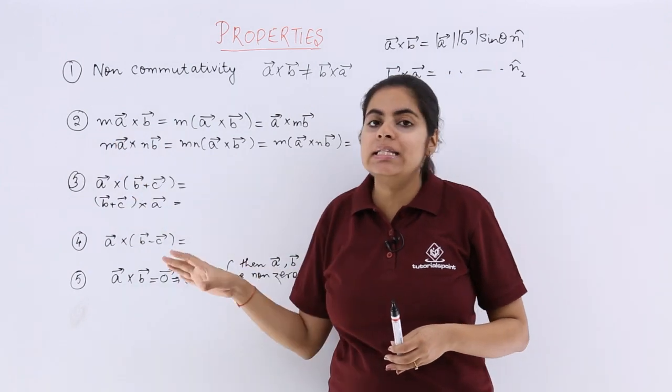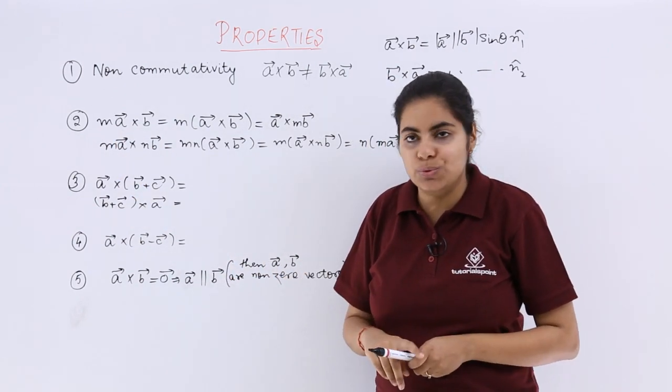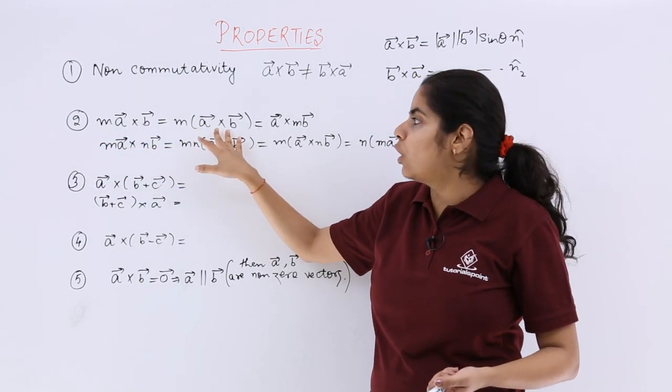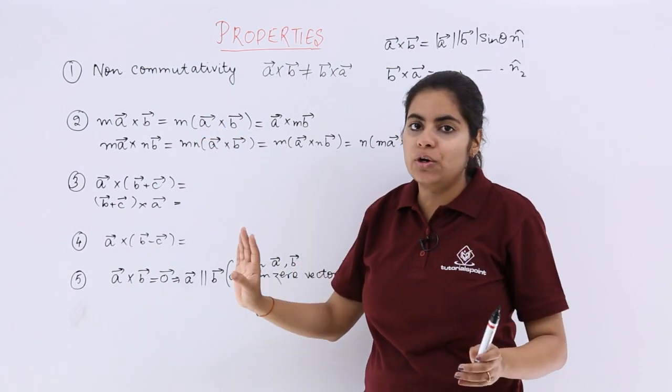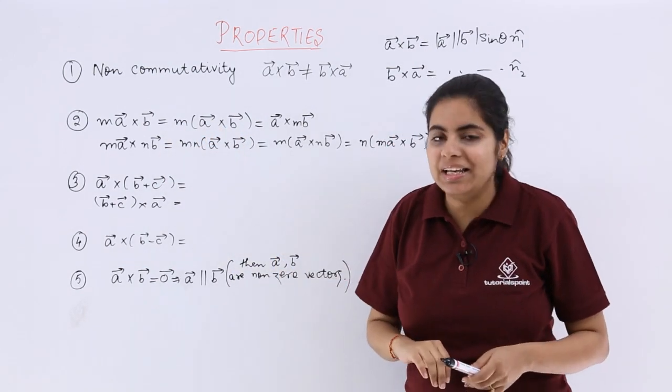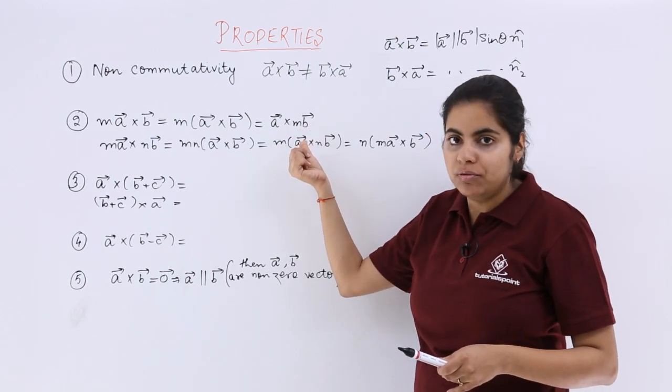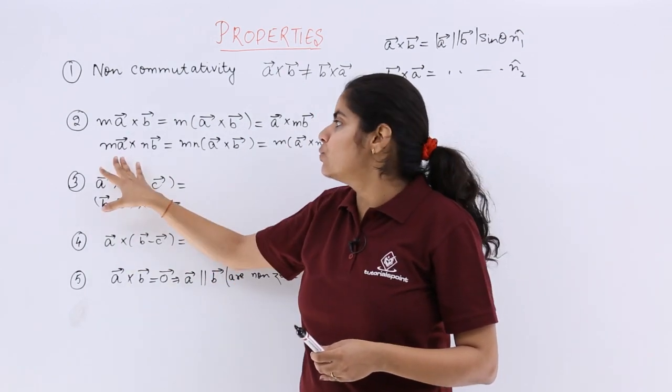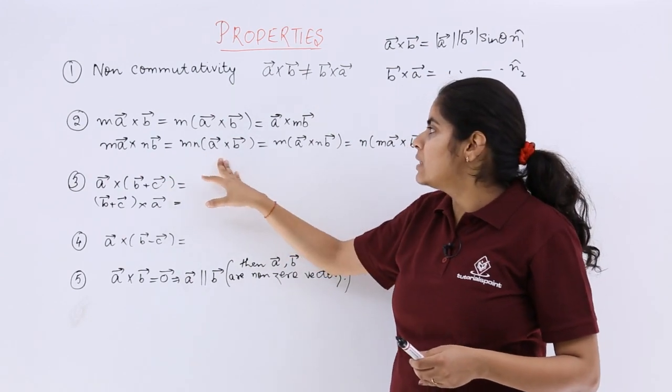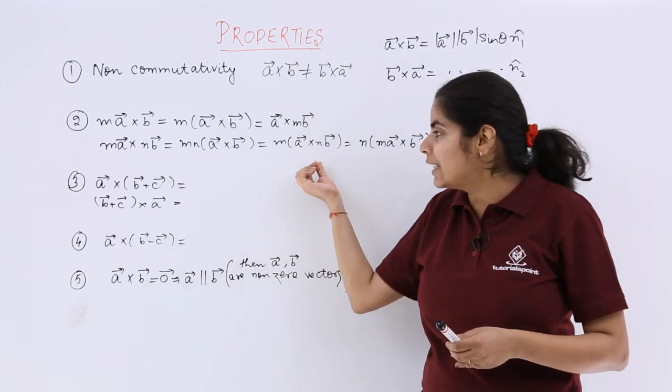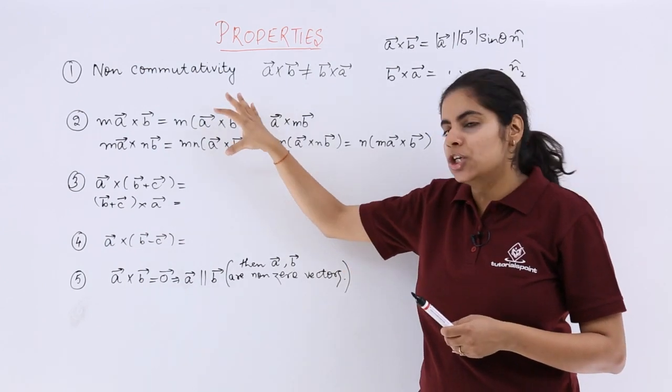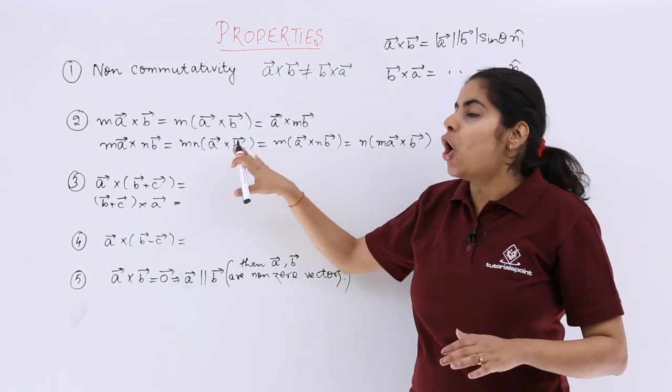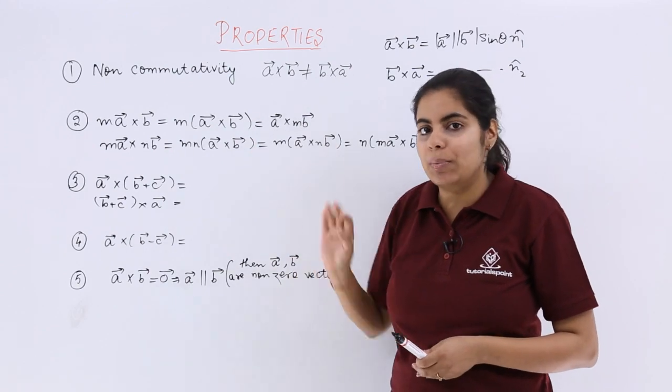The second is stating the properties when scalars are introduced. So m is a scalar, so m(a × b) can also be solved like first you draw the system with a × b, you solve it and then multiply the scalar, or you can take m with b first and then cross product accordingly. But when two scalars are introduced, one is m, another is n, then what happens? Individually mn can be separated, then firstly m can be separated, n can be treated with b and so on. So this is just simplifying your calculation, whatever suits you best, you can use it. So introduction of scalars in the case of vector product is this property all about.